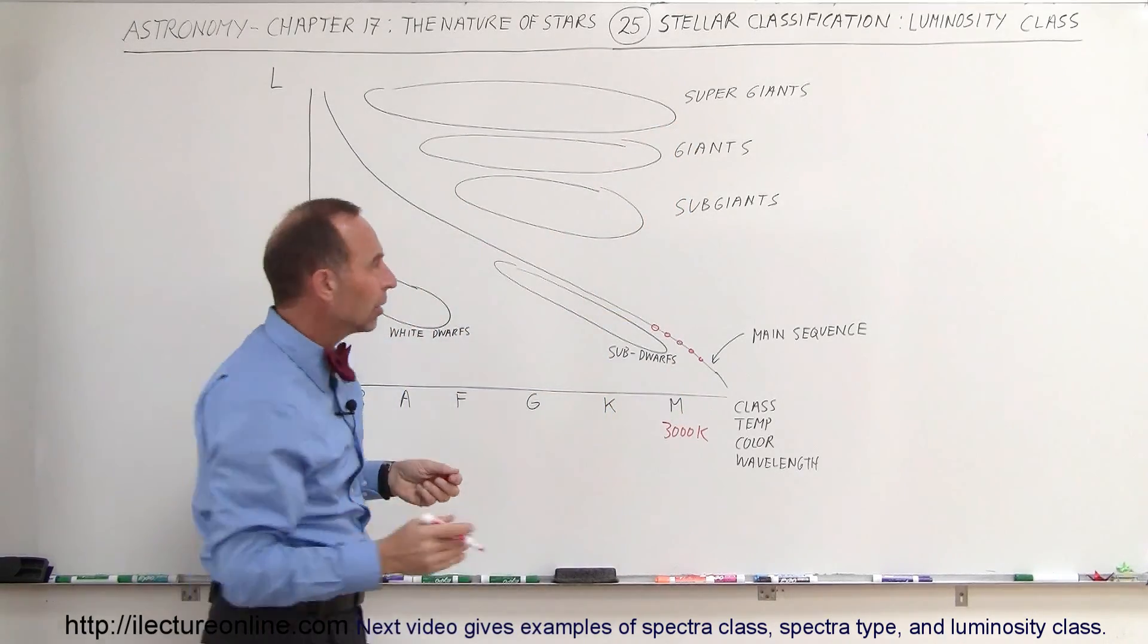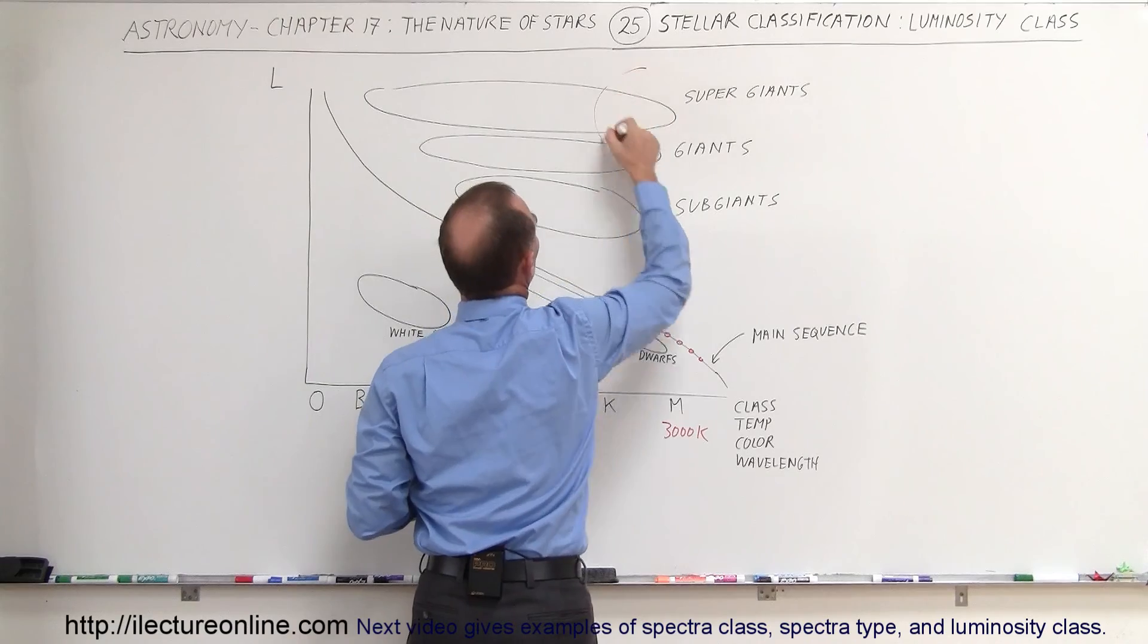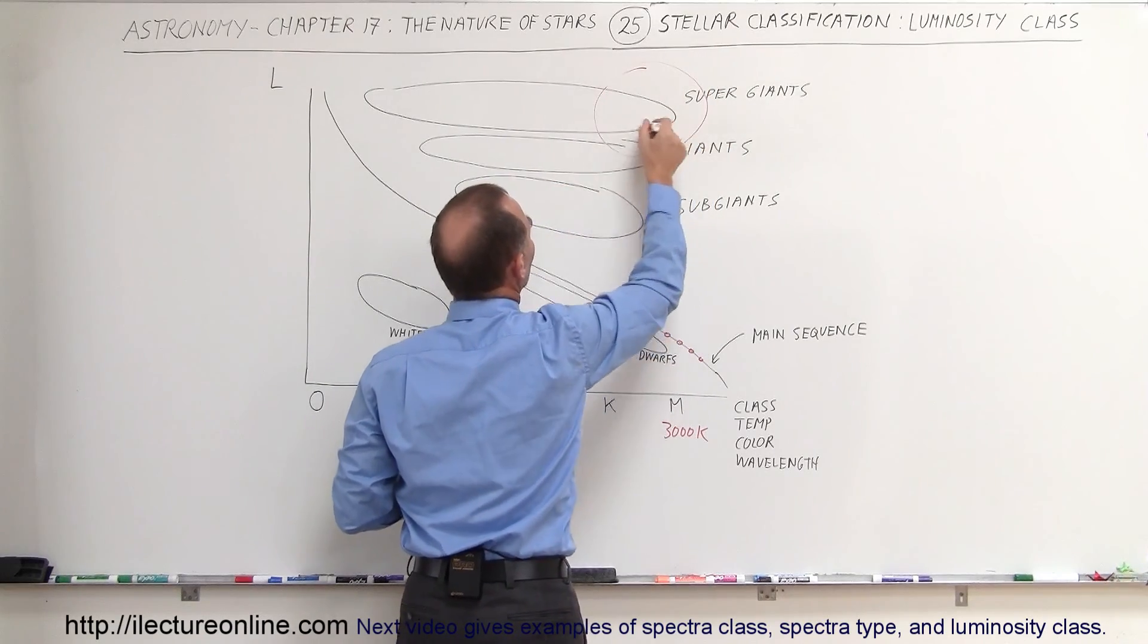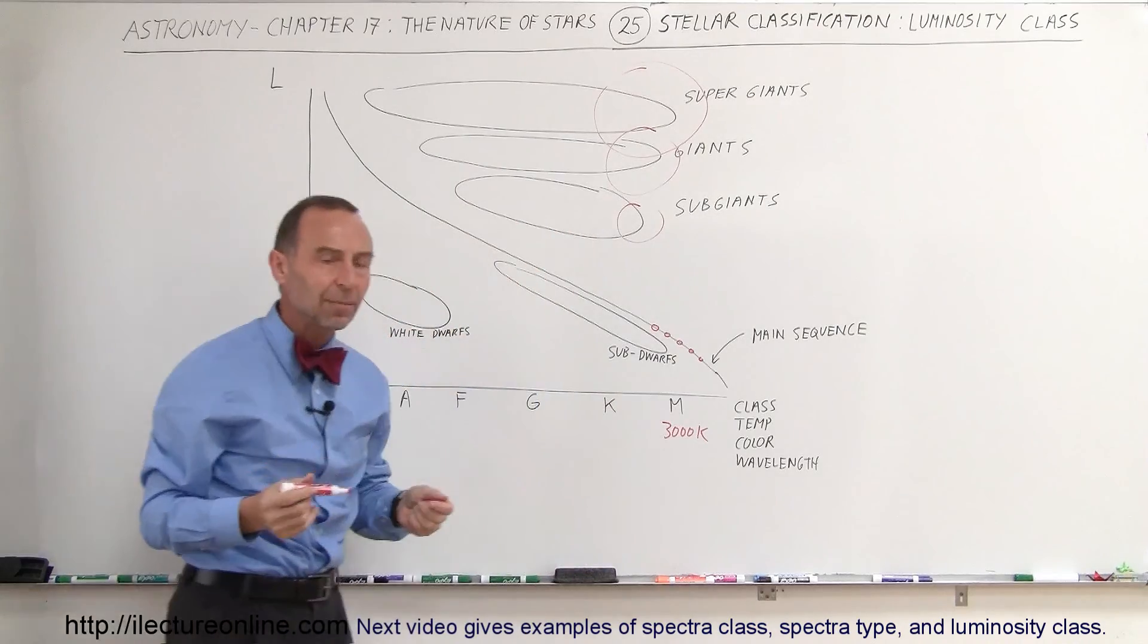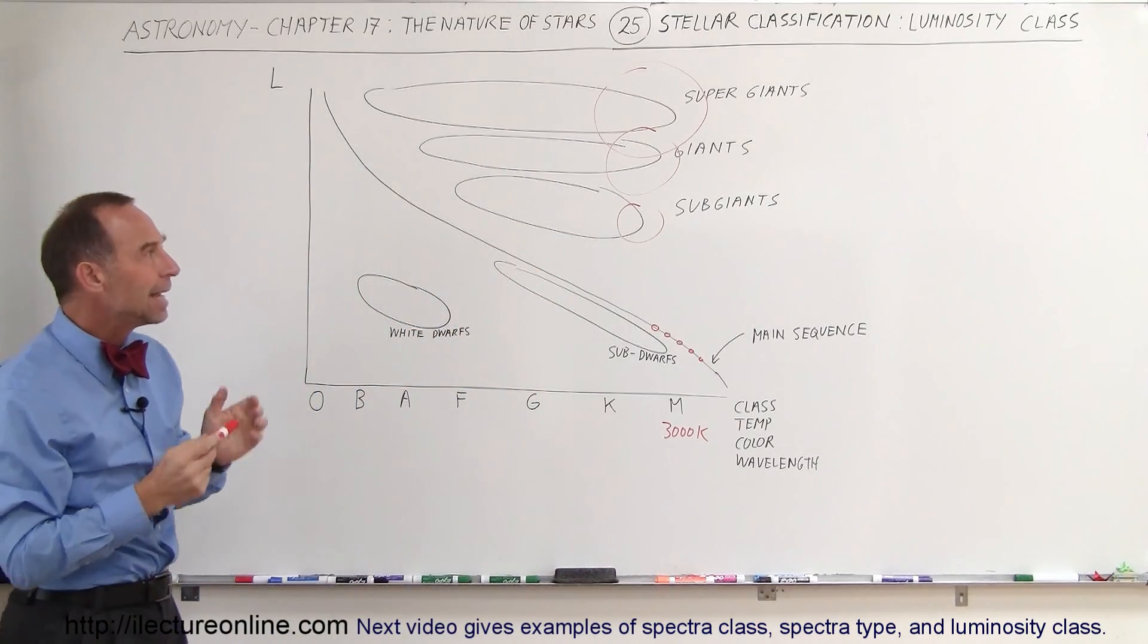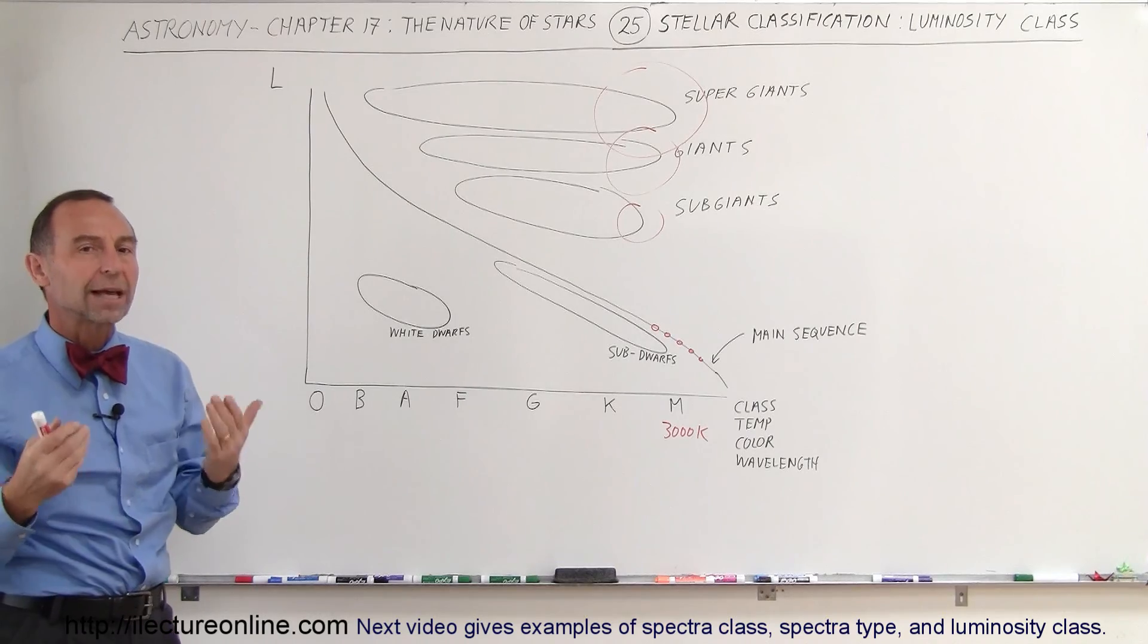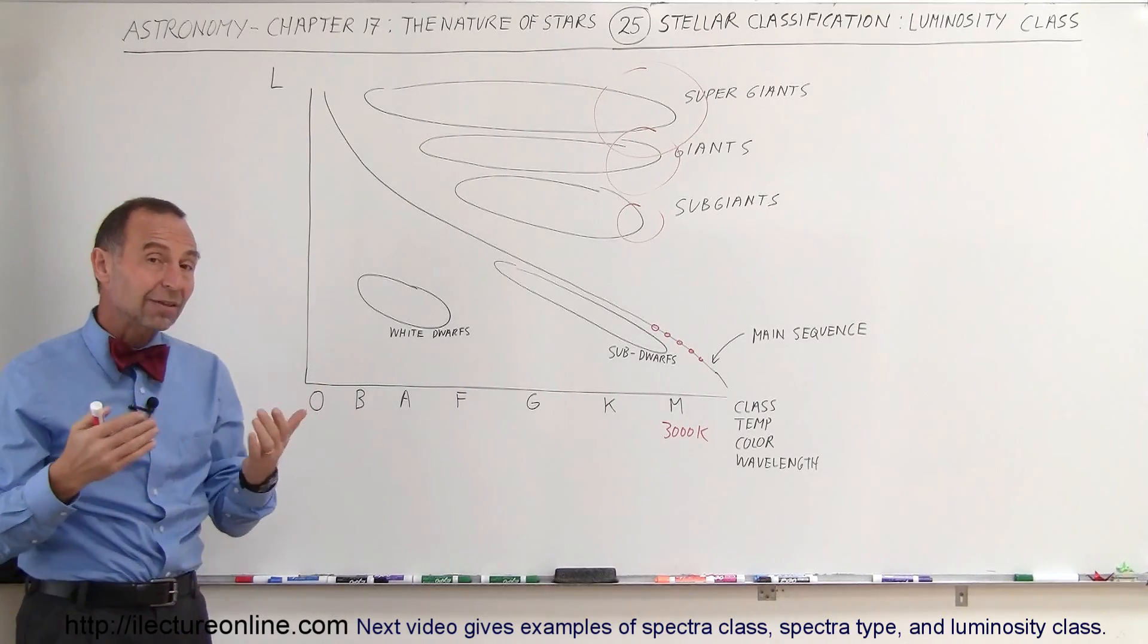Yet they had the same surface temperature and the same colorization. But of course we had these extremely large supergiants, we had large giants, we had some subgiants. They all had the same color, same temperature, and we had to find a way of finding the difference between the stars by looking at the spectrum.